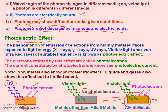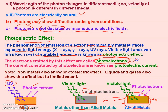The formal definition: the phenomenon of emission of electrons from a metal surface exposed to light of suitable frequency — meaning greater than the critical frequency — is known as the photoelectric effect. The electrons emitted from the metal surface are called photoelectrons. The current constituted by photoelectrons is called photoelectric current, since moving charge per unit time is electric current, and here it is due to the light effect.